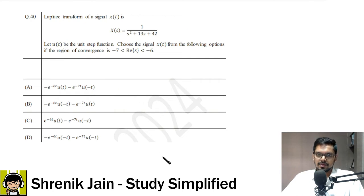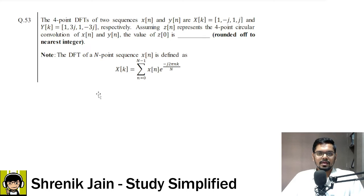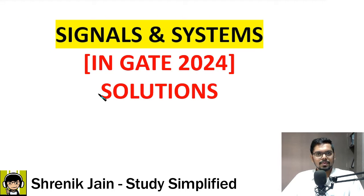And then this is also easy question from Laplace Transform. Just you have to be aware with this ROC, otherwise you will fall in the trap. Now, this is also easy question from DFT. So overall, the paper was easy for signal and system section.